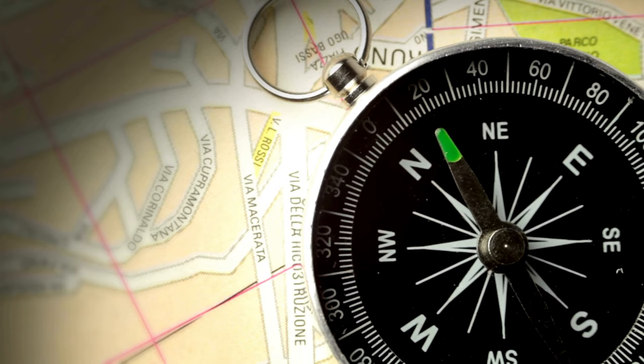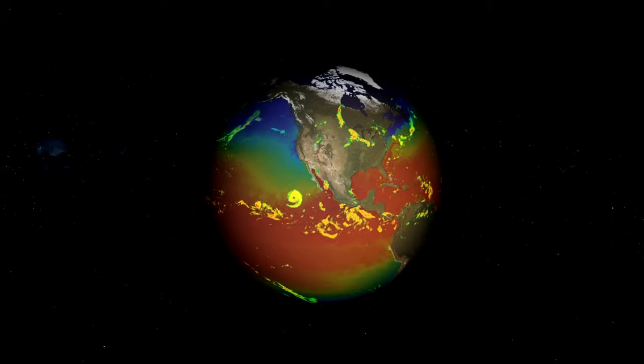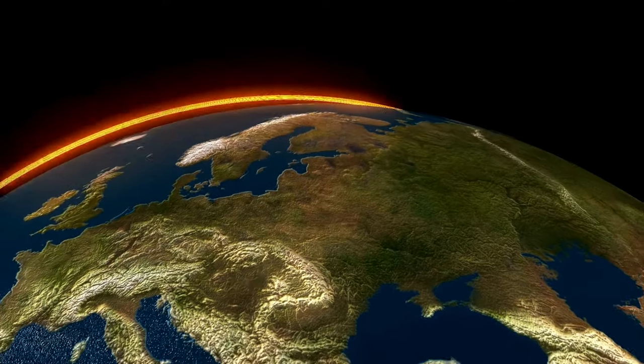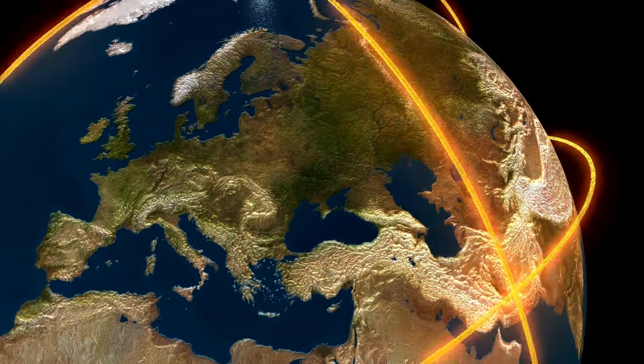Fascinatingly, while the magnetic north pole currently meanders across northern Canada at a pace of 25 miles a year, evidence suggests the occurrence of not just two, but possibly up to eight poles simultaneously during some of these flips.